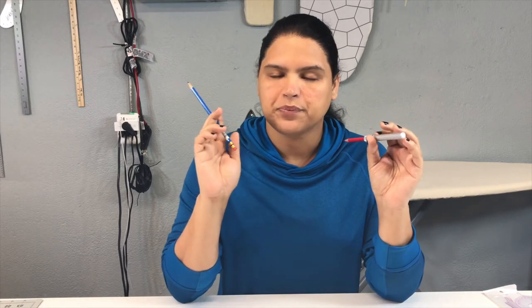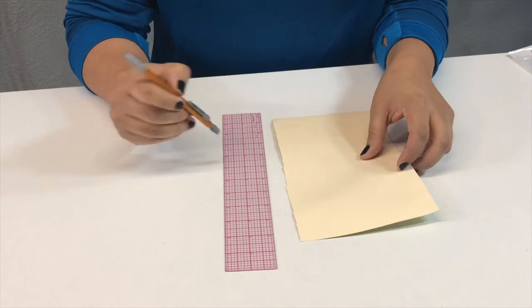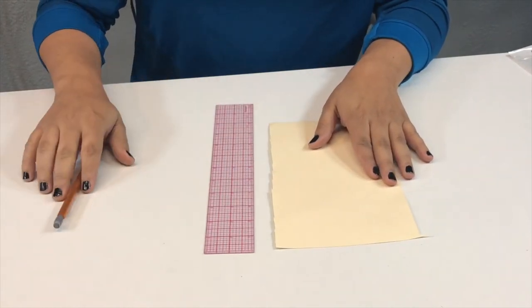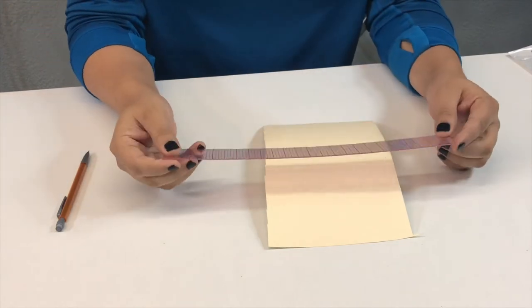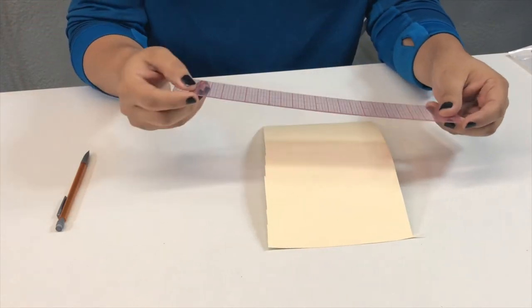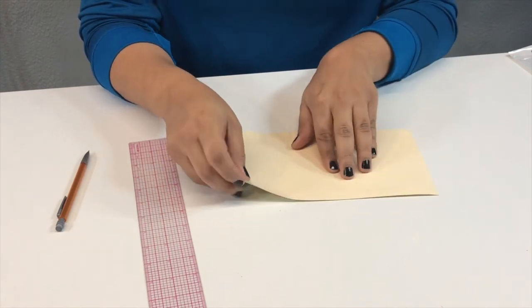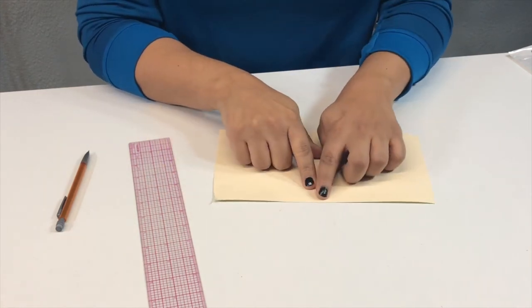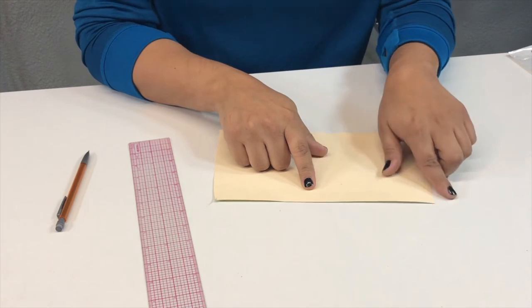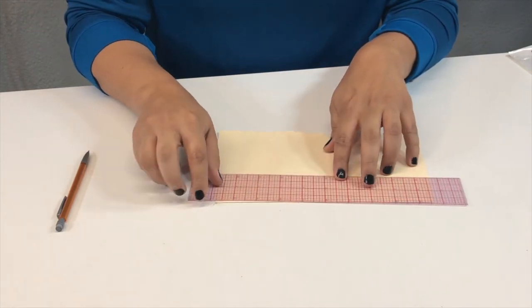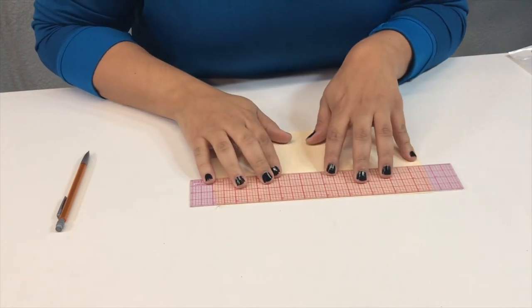Now we're going to draft the ruler. The way I like to do it is transfer measurements from this ruler. Try to use the edge of the material because normally the edge is already straight, so you don't have to create another line. Take your ruler, put it here, and make sure it's completely straight on both sides.